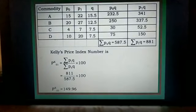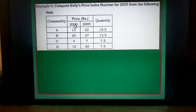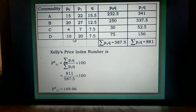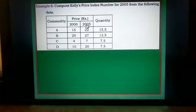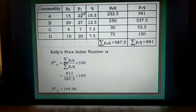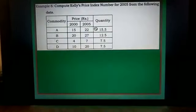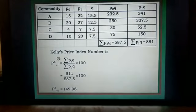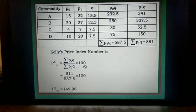For the calculation, P0 values for year 2000 are 15, 20, 4, and 10. P1 values for year 2005 are 22, 27, 7, and 20. The given quantities are taken as Q. Kelly's price index number P01K equals sum of P1Q divided by sum of P0Q, multiplied by 100.